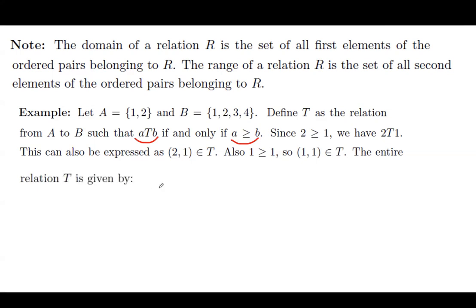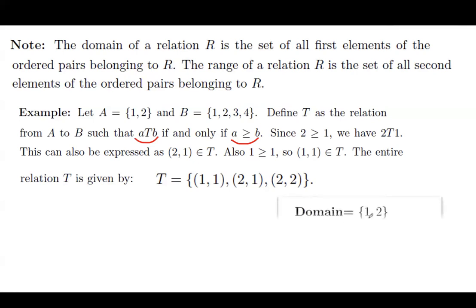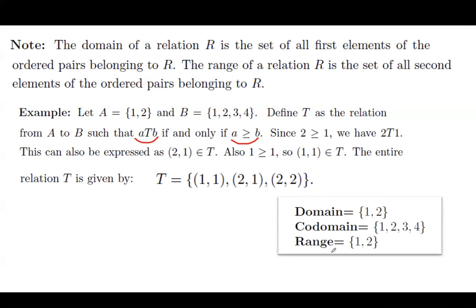The entire relation T can be written as the set: {(1,1), (2,1), (2,2)}. Since 2 ≥ 2, we include (2, 2). We cannot include (1, 3) because 1 is not greater than or equal to 3, and we cannot include (2, 3) because 2 is not greater than 3. So this relation only has 3 members. The domain includes 1 and 2, the codomain is set B itself, and the range also has just 1 and 2.